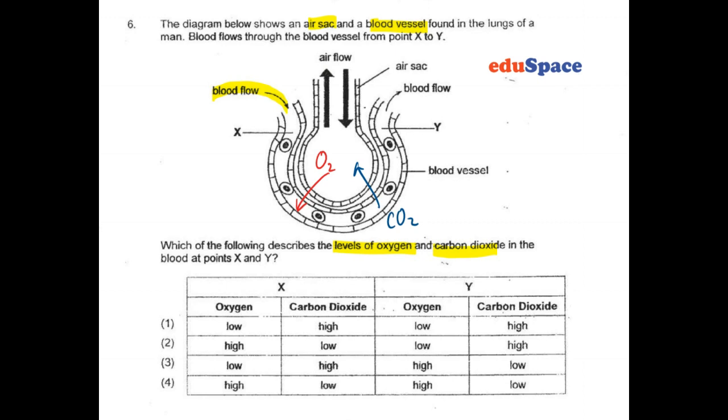In this case, we have the air sac and I have indicated the arrow showing that oxygen is flowing from the air sac to the blood flow. To be specific, it goes into the red blood cell and carbon dioxide is flowing from the plasma of the blood into the air sac.